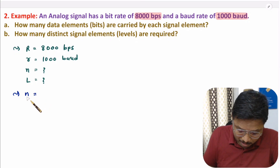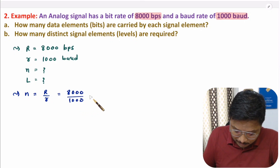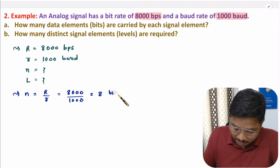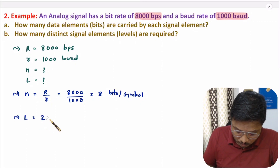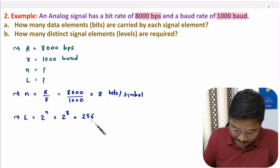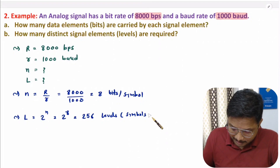We have bit rate and baud rate, so we can identify the number of bits per symbol: n = R / r = 8000 / 1000 = 8 bits. Based on that, the total number of different elements is L = 2 to the power n = 2 to the power 8 = 256. This can be expressed as 256 levels, symbols, or elements.